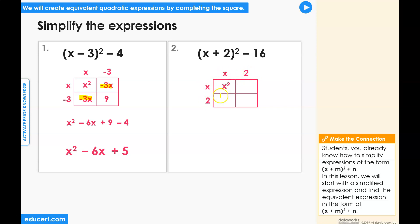x times x equals x squared, x times 2 equals 2x, 2 times x equals 2x, 2 times 2 equals 4.